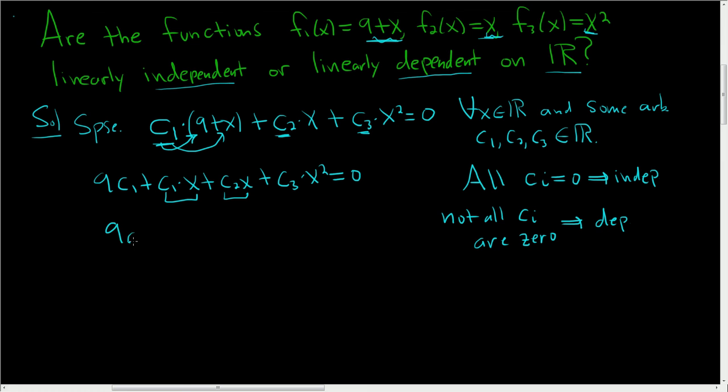So how do we figure out what the c's are? Well the left hand side is a polynomial. The right hand side is a polynomial. Two polynomials are equal only when their coefficients are the same.